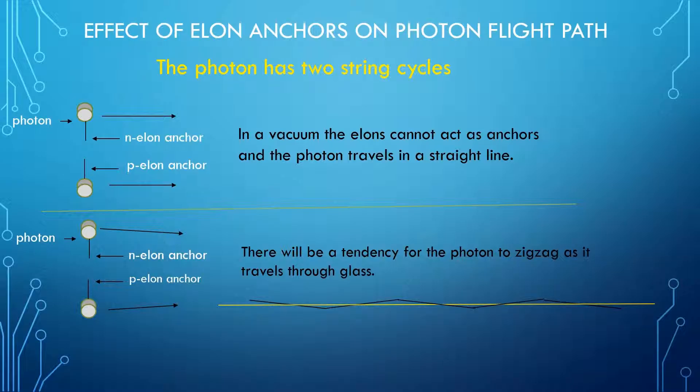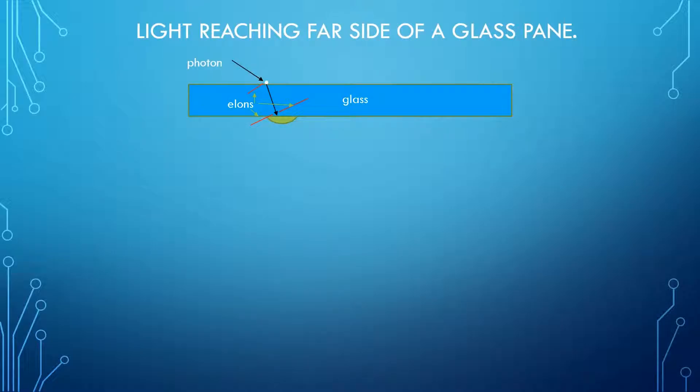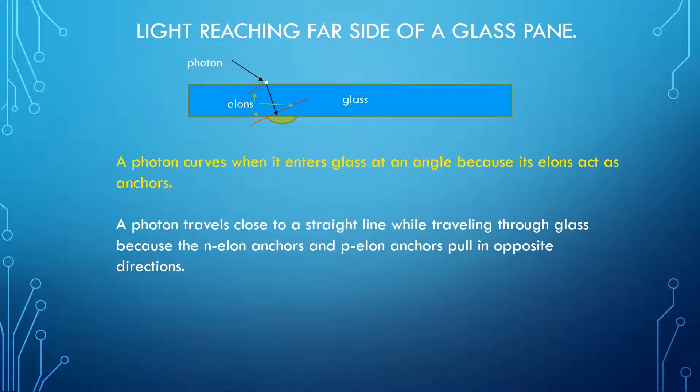Now, although light may become synchronized when it enters glass at an angle at the point it exits the glass, as shown in the next slide, refraction occurs when it enters glass at an angle because its elons act as anchors. A photon travels close to a straight line while traveling through glass because the N elon anchors and P elon anchors pull in opposite directions.